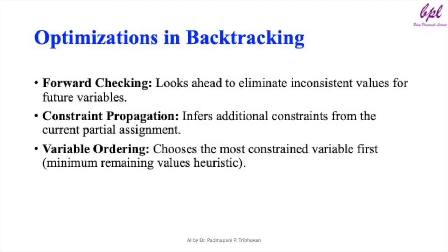While backtracking search is a simple and effective approach, it can be optimized in several ways. Forward checking allows the algorithm to look ahead and rule out values that would lead to constraint violations later. Constraint propagation works by inferring additional constraints as more variables are assigned. Finally, choosing the most constrained variable first can significantly reduce the search space — this is called variable ordering.